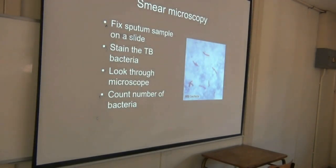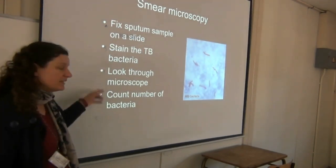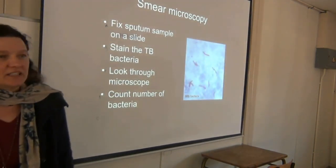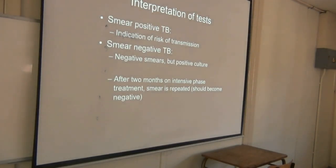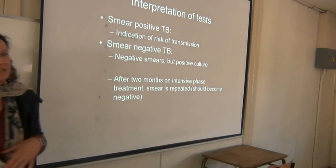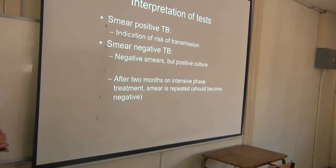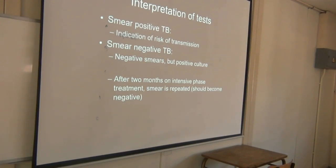For smear microscopy, you take the sputum, fix it on a slide, stain the TB, look through the microscope, and count the bacteria. Smear microscopy has a sensitivity of about 100 to 300 bacteria, so GeneXpert is much more sensitive. Smear-positive TB carries a higher risk of transmission. Smear-negative TB usually happens in people with compromised immunity or children, because they can't produce sputum as easily.